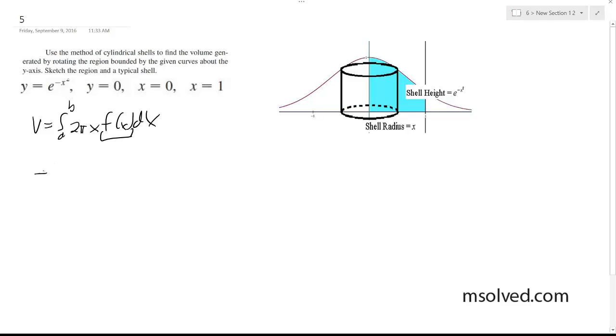Okay, so in this case it's going to be from 0 to 1, 2πx, which is the radius, times the function which is e raised to the x squared dx.